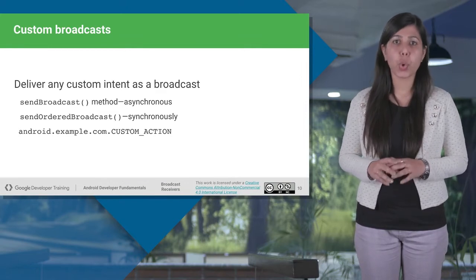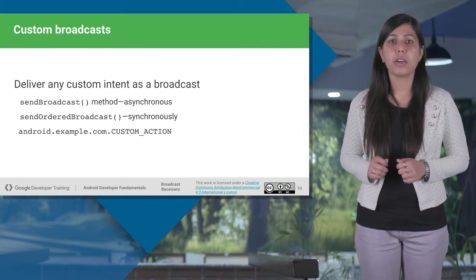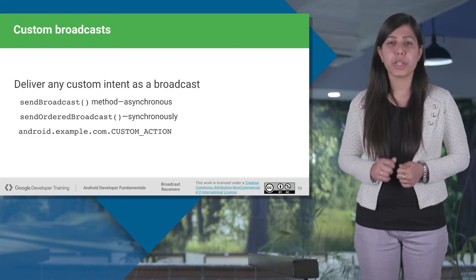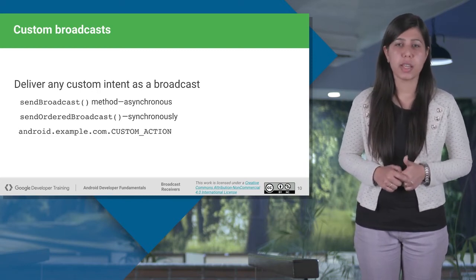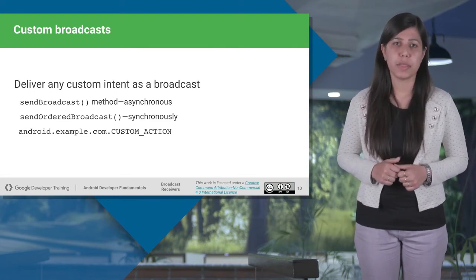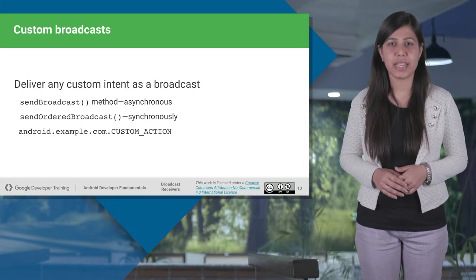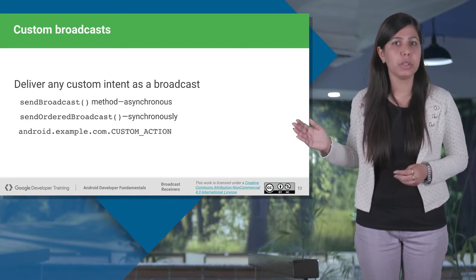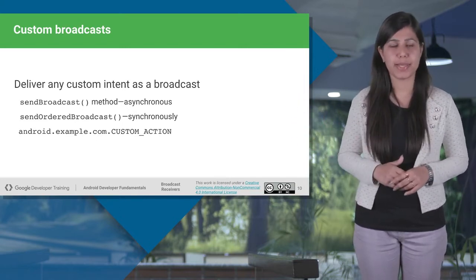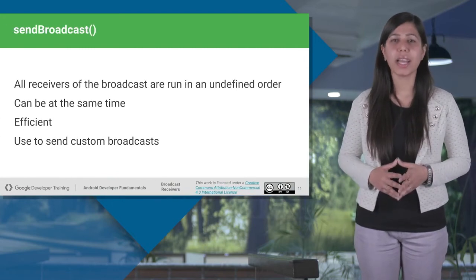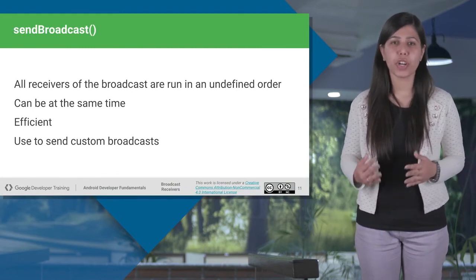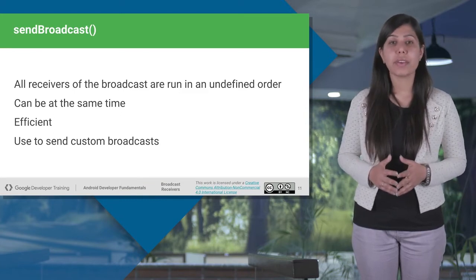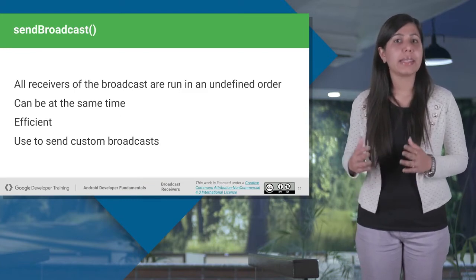To broadcast the intent to all interested broadcast receivers, there are two major classes of broadcasts. Either use normal broadcasts, which are sent using the sendBroadcast method, or ordered broadcasts, which are sent with the sendOrderedBroadcast method. After sending the custom intent, you need to register the receiver, which defines the action for the custom intent in an intent filter for the receiver inside AndroidManifest.xml. sendBroadcast methods are completely asynchronous — the broadcast events or intents are received by all the receivers in an asynchronous fashion. The receivers are run in an undefined order, often at the same time. It's efficient, but receivers cannot use results from other receivers.